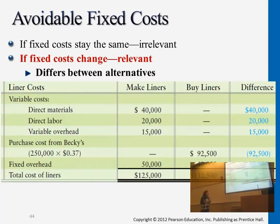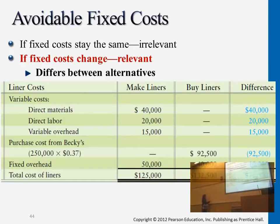We have $75,000 in variable cost if we produce it in-house. This is the variable cost part, and we have fixed cost of $50,000. So this is the cost of producing in-house.